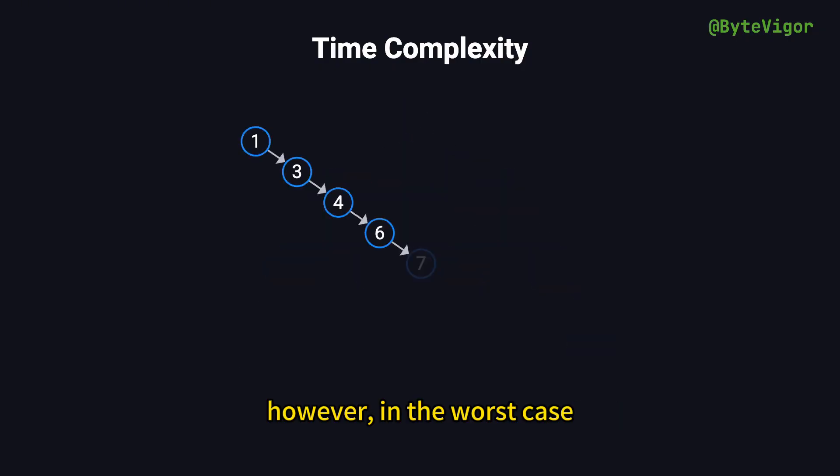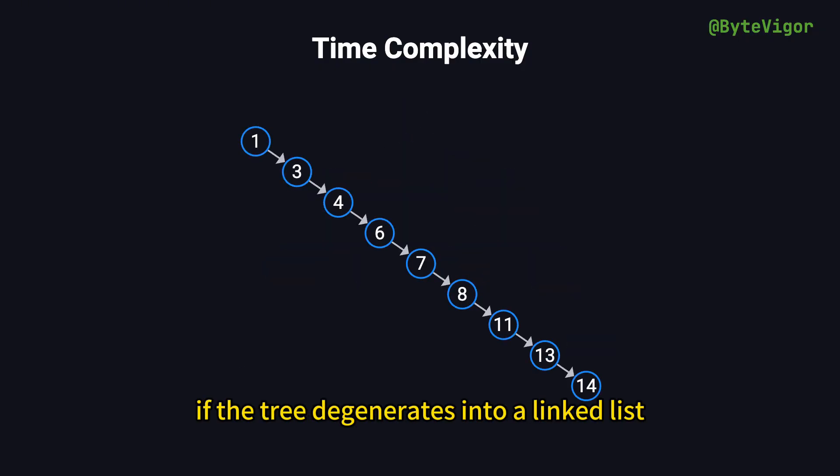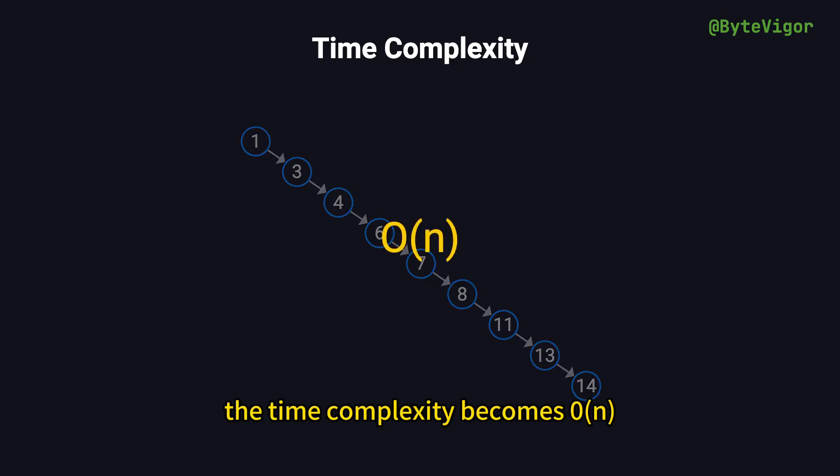However, in the worst case, if the tree degenerates into a linked list, the time complexity becomes O(N). This emphasizes the importance of keeping the tree balanced to ensure efficient operations.